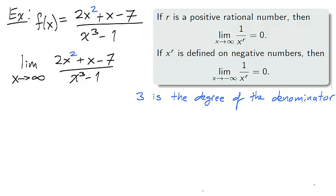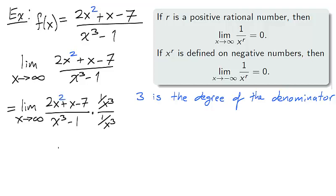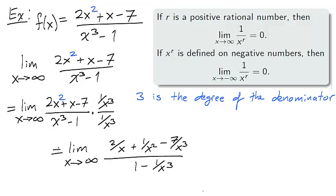Taking a similar example but changing the numerator to 2x² + x − 7, we calculate the limit as x approaches infinity the same way. We multiply the numerator and denominator by 1 over x cubed, since 3 is the degree of the denominator. Distributing 1 over x cubed, as x approaches infinity the expressions circled in red approach 0, and therefore the limit as x approaches infinity for the function f is 0. The degree of the numerator is less than the degree of the denominator, and the horizontal asymptote is y equals 0.